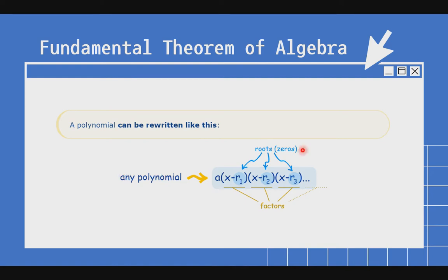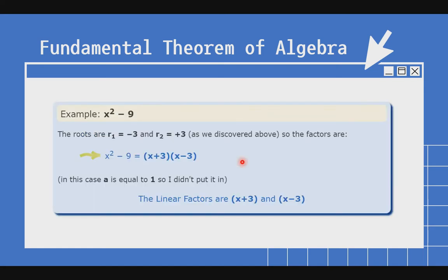A polynomial can be written as A times (x minus r₁) times (x minus r₂) times (x minus r₃), and so on. These expressions in parentheses are called factors. Yung r₁, r₂, and r₃ naman ay ang roots. So kung mapapansin natin, yung negative ay hindi kasama sa may shade — ang may shade lang ay yung ating rs or yung roots. Bawat polynomial ay may factors na pwedeng ganito ang kanyang format.